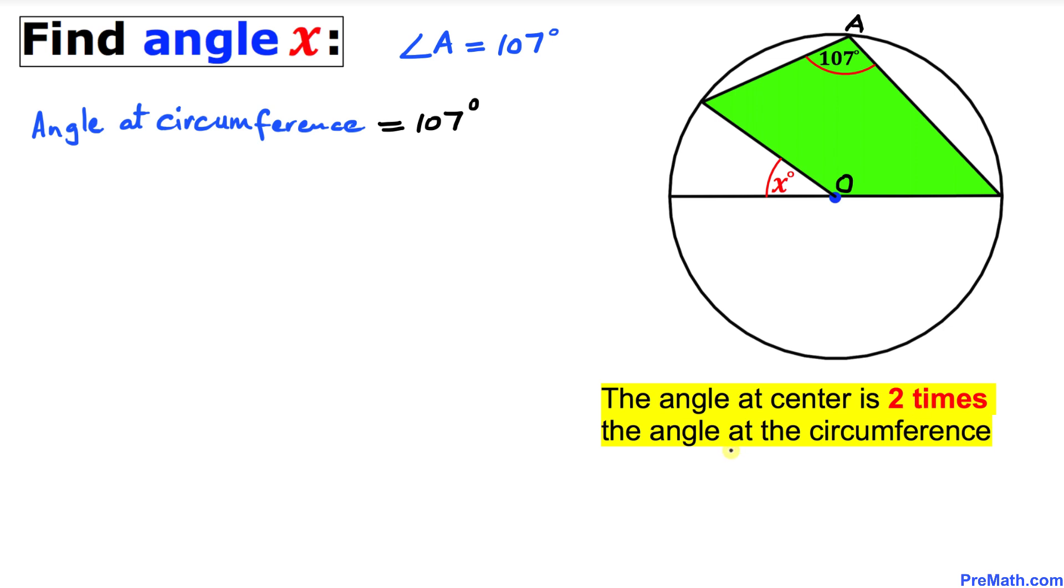Therefore, the angle at the center is going to be twice angle A, which is 107 degrees. So this is 2 × 107 = 214 degrees. Therefore, the angle at the center is 214 degrees.